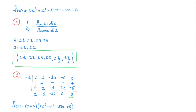Now that we have one zero, which was -1, we carry on and check whether more values from our list are also zeros. For the sake of this tutorial, I'll check whether 1/2 is a zero. To make things easier, rather than working with the full function f(x), we'll work with the cubic polynomial 2x³ - x² - 12x + 6 that we just obtained.